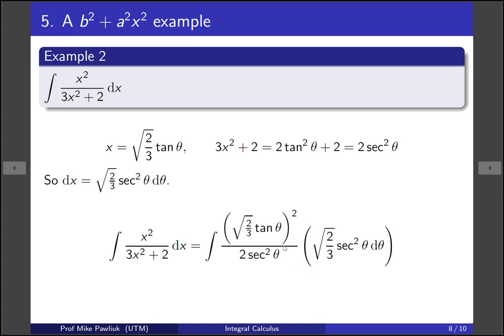And now we need to actually just factor out all the constants and simplify all this. There's a secant squared and a secant squared, which will cancel, and then we'll factor out a bunch of constants.